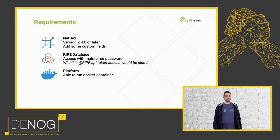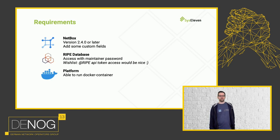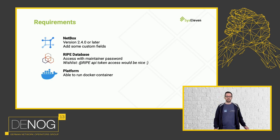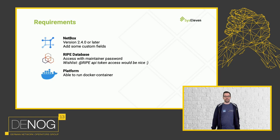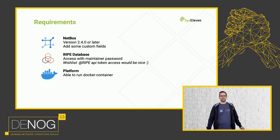What do you need in order to run this? Of course you need NetBox version 2.4 or later — though I hope you don't have such an old version running anymore. You have to add some custom fields to NetBox, for example a 'ripe_report' boolean field to determine if an object should be present in the RIPE database or not. You also need to add a dropdown list for the right template to select how the prefix should be processed. And of course you need RIPE database access with a maintainer password.